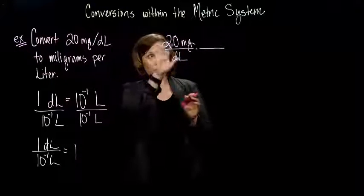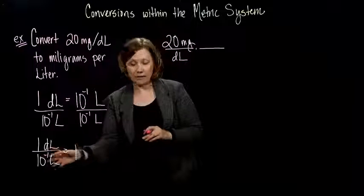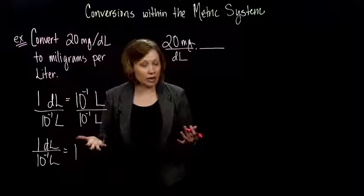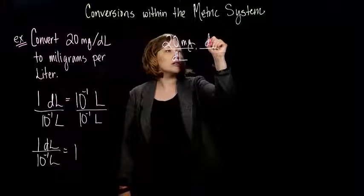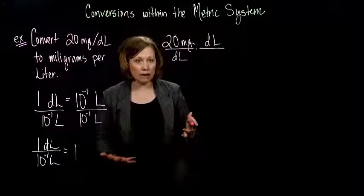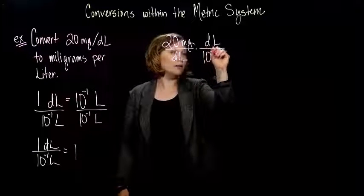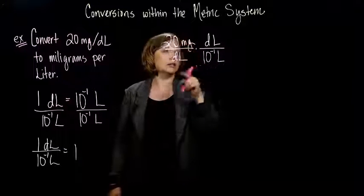So, I have 1 deciliter per 10 to the negative 1 liters is equivalent to 1. So, I can multiply this guy, my 20 milligrams per deciliter by this fraction. And I'm not changing the amount that I have because this guy is equivalent to 1. So, I have, I'm just going to write DL. You can write 1 DL. Anything times 1 is just itself. 10 to the minus 1 liters on the bottom.